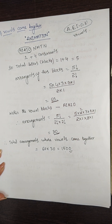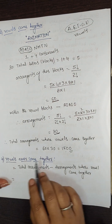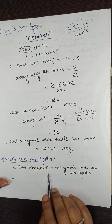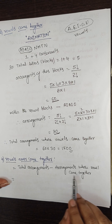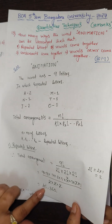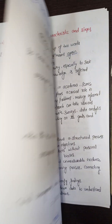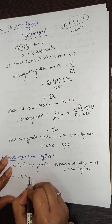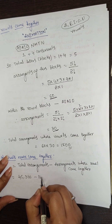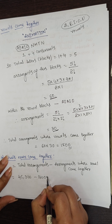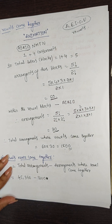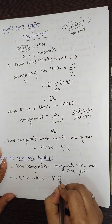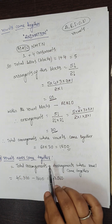For vowels never coming together: we use total arrangements minus arrangements where vowels come together. That is 45,360 minus 1,800 = 43,560. This is the answer for vowels never coming together.